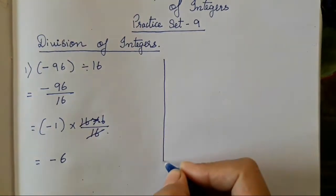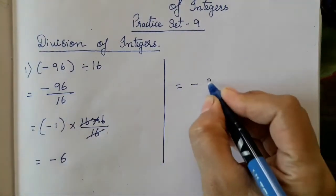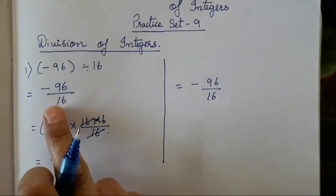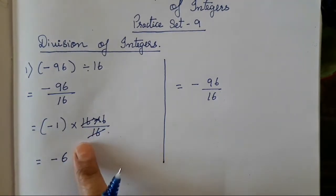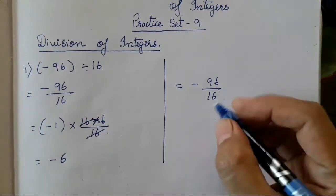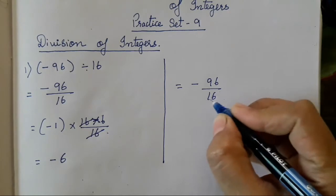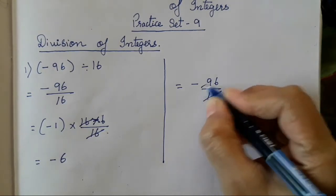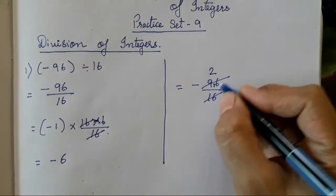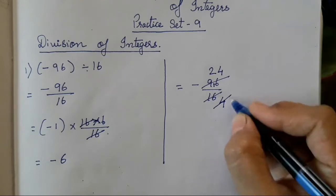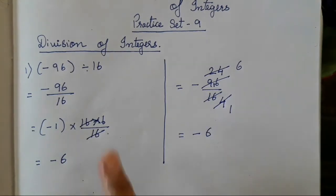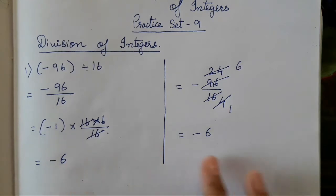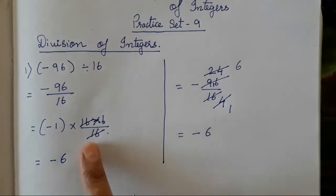So minus 96 upon 16 — when you have written it in this form, you can very easily reduce it and get the answer. If you are good in tables, you can follow this step, or you can reduce it and then find the answer. We will reduce it with the table of 4. 4 fours are 16, 4 twos are 8, carry 1, 4 fours are 16, 4 ones are 4, 4 sixes are 24. The answer is going to come the same. This is the first method and this is the second method — whichever is easy for you. If you don't know the table, solve it this way; if you are good in tables, solve it this way.